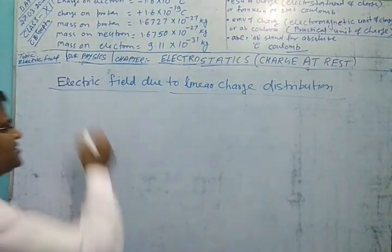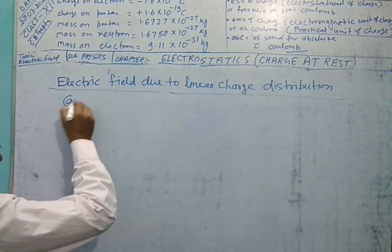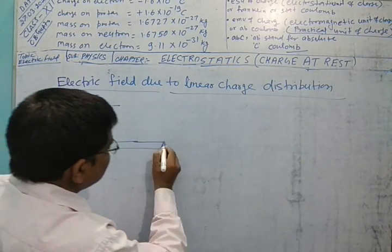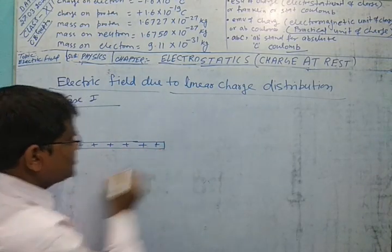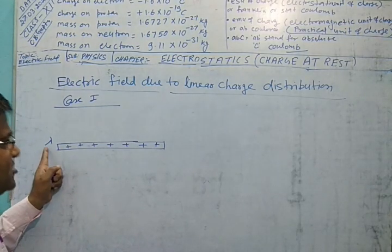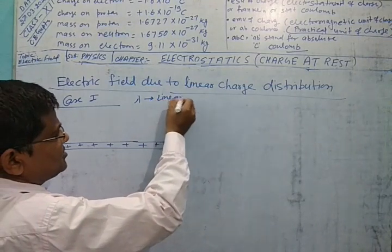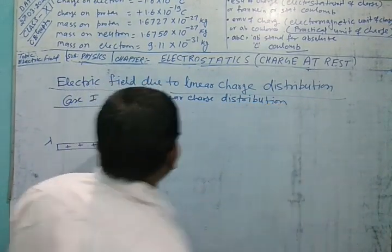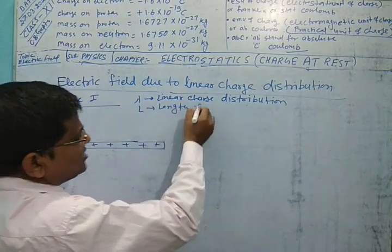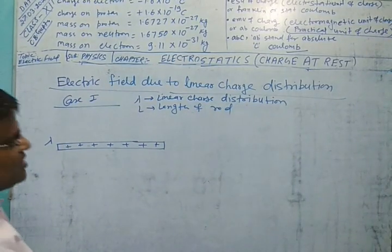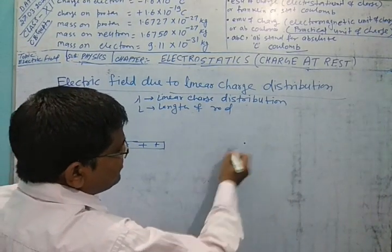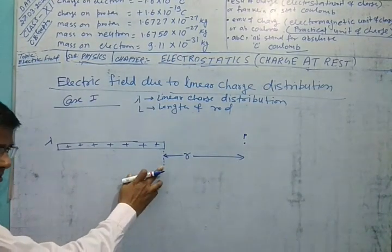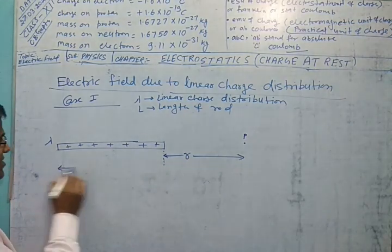Linear charge distribution has two cases. Case 1: a thin rod on which a charge is distributed. Lambda is the linear charge density, and L is the length of the conductor rod. We want to find the electric field at point P, which is at distance R from this end of the rod, and the length of the rod is capital L.